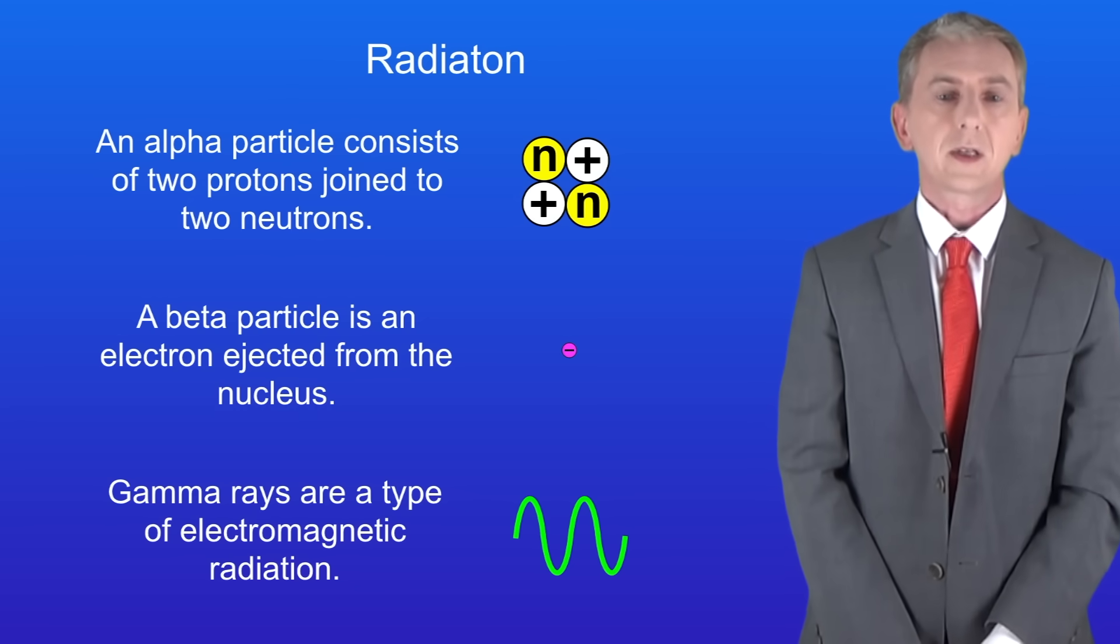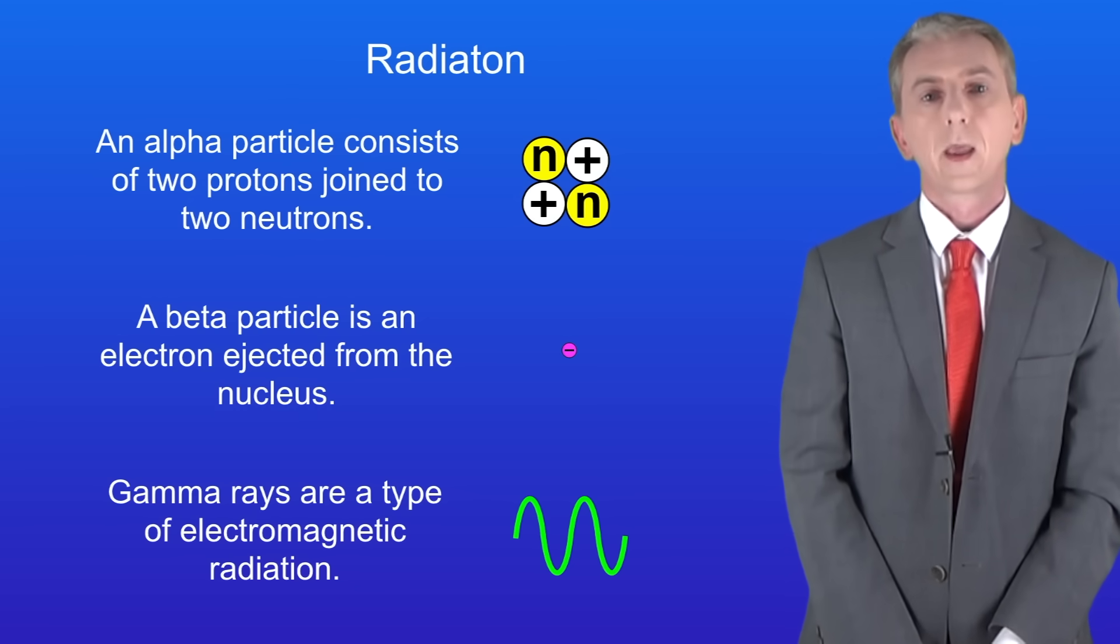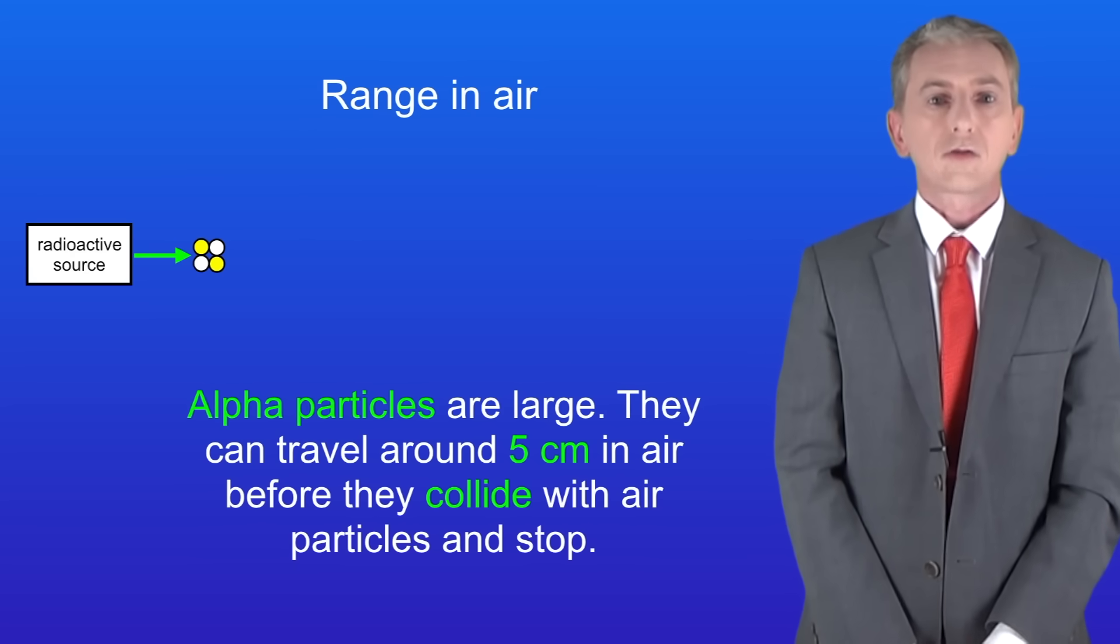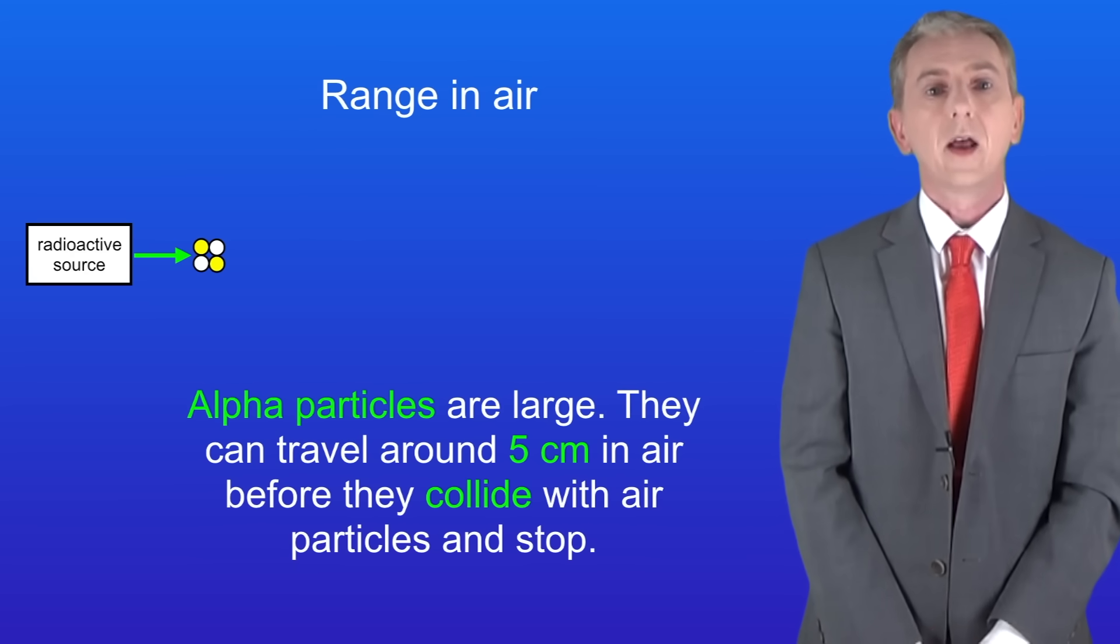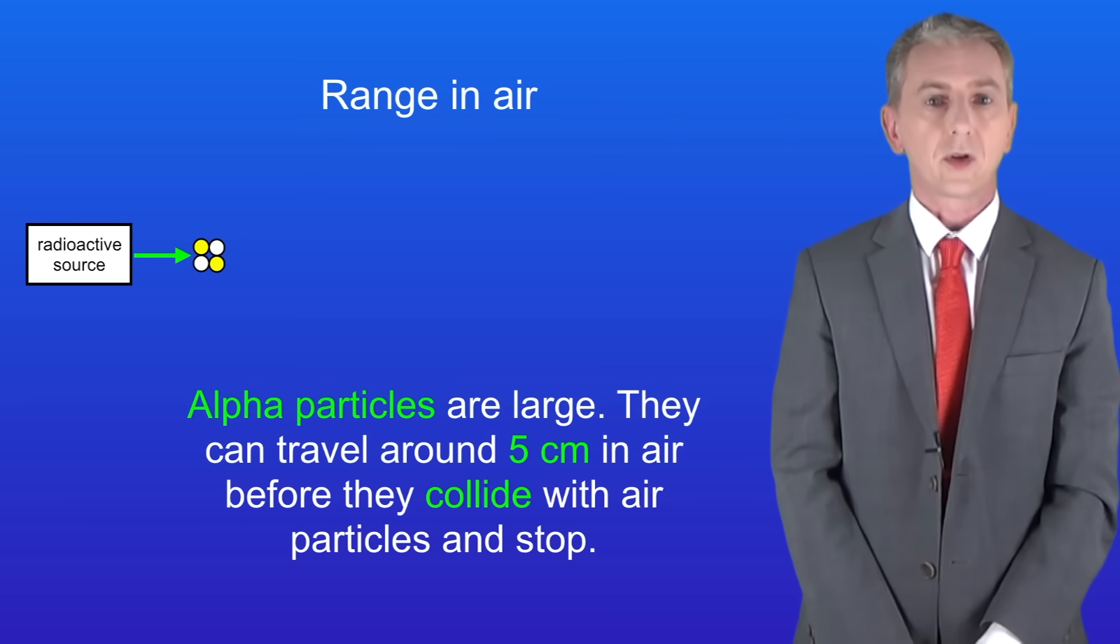The first key property is their range in air. Alpha particles are large, that means that they can travel around five centimeters in air before they collide with air particles and stop.